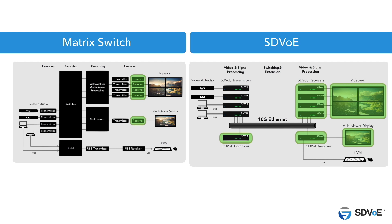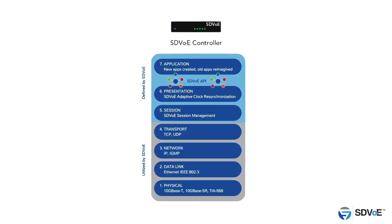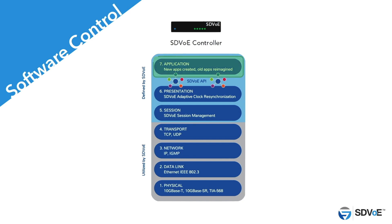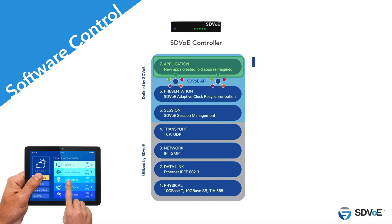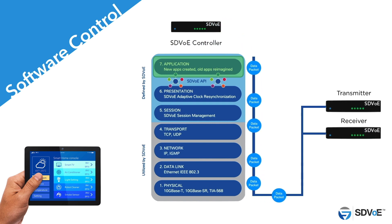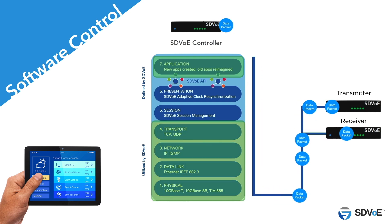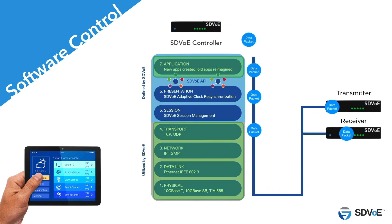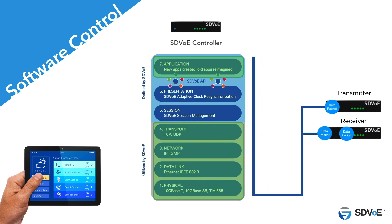So where does all this control actually come from? The answer is software — more specifically, an application programming interface. Put simply, this is a set of commands which can be used by any control interface to tell the transmitters and receivers what they need to do or how they should behave. Because we are using ethernet to transport the data packets, all we need to focus on is talking to the transmitters and receivers in a common language which they all understand. And this is the job of the API.